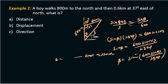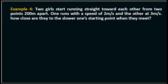Example three: Two girls start running straight towards each other from two points 200 meters apart. One runs at a speed of 2 meters per second and the other at 3 meters per second. How far is the meeting point from the slower one's starting point?